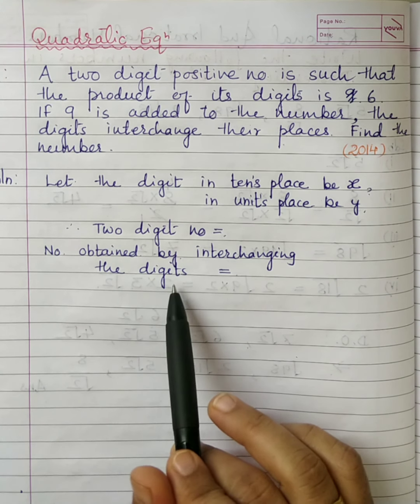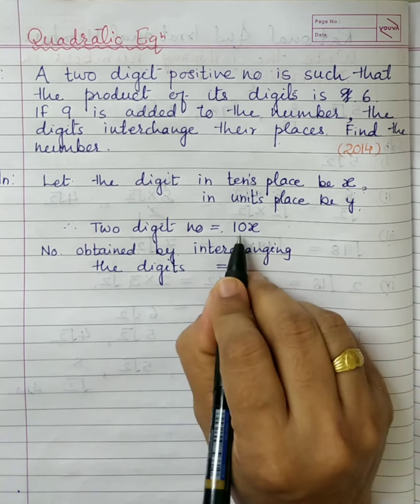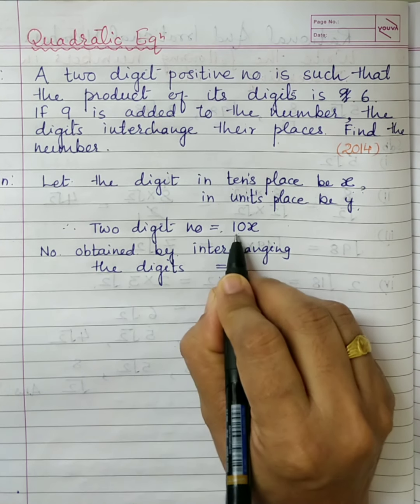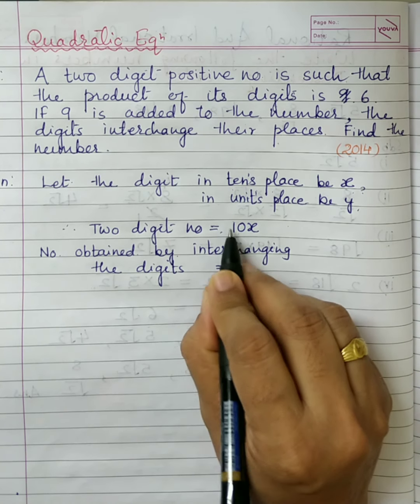Your assumption of the two-digit number is important. We need to assume the two digits properly. Let the digit in the tens place be x and the units place be y. What will be the number? It will be 10x, because x is the digit in the tens place and the place value is 10 multiplied by x, plus y. So our two-digit number is 10x + y.